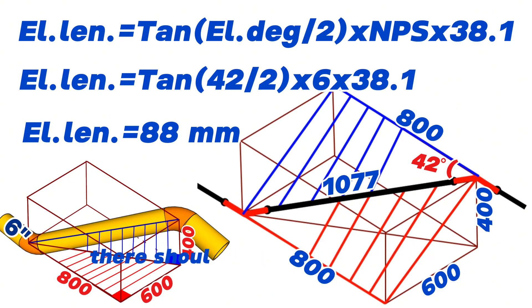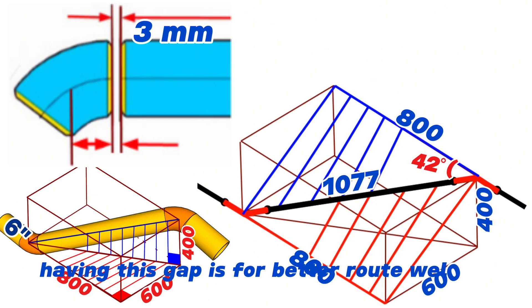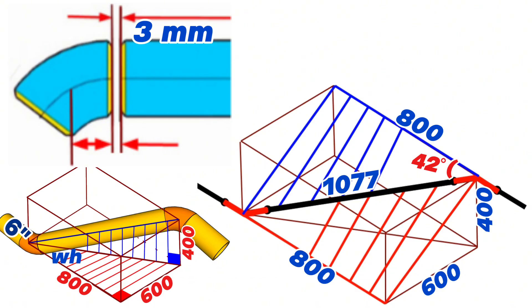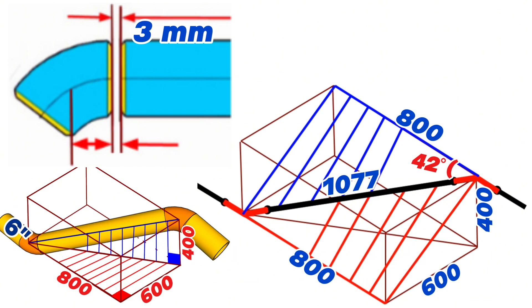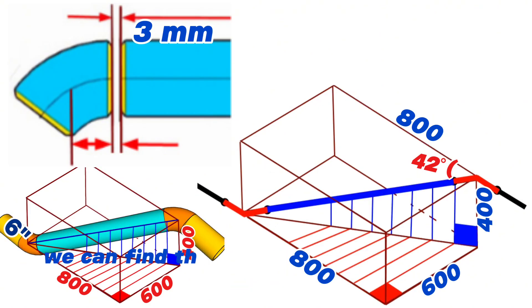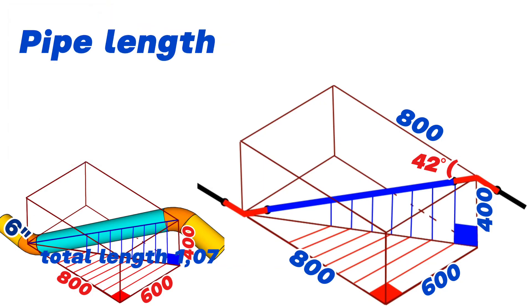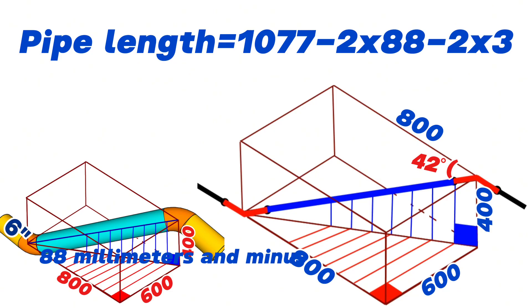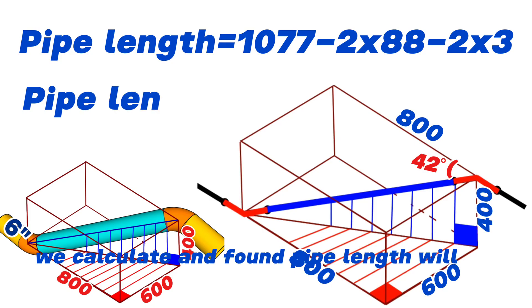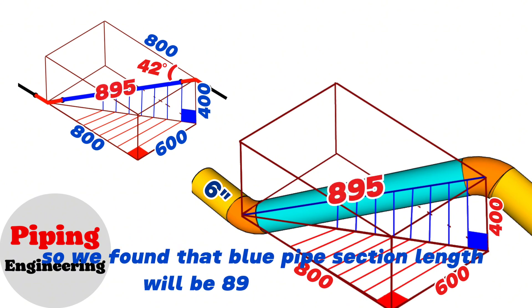During fit-up there should be a gap of about 3mm between the pipe and elbow to be welded, for better root welding. We take these gaps into account when calculating the length of the blue pipe section. Pipe length equals the total length of 1077mm, minus 2 times the 42-degree cut elbow dimension of 88mm, minus 2 times the welding gap of 3mm. The calculated pipe length equals 895mm. So the blue pipe section length is 895mm.